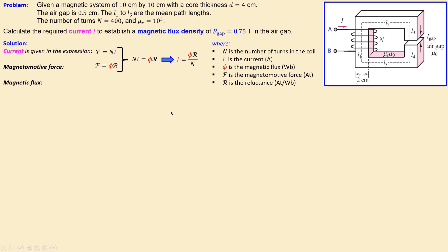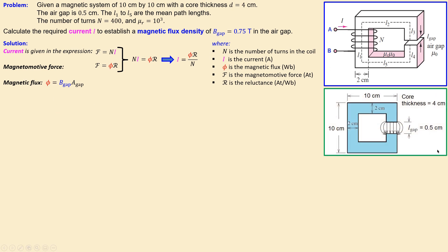The magnetic flux is given by φ = B × A. Since flux is the same throughout the series core and gap, we can use the magnetic flux density of the gap (0.75 T) and the cross-sectional area of the gap to calculate the flux.